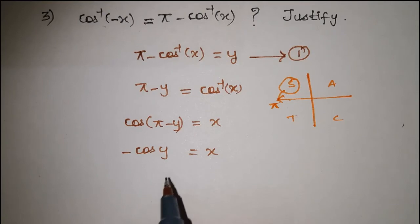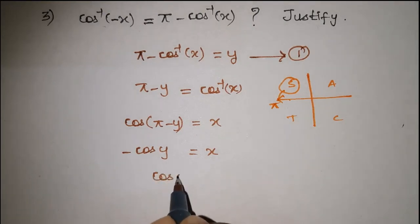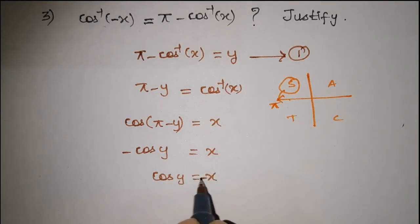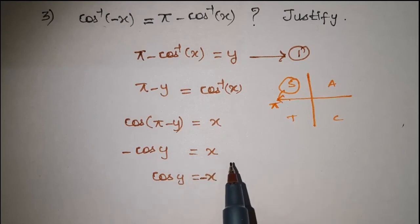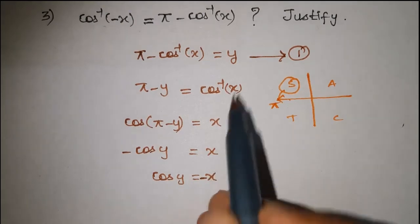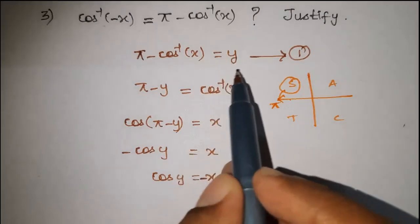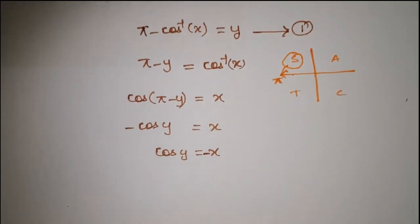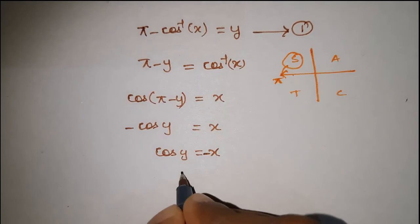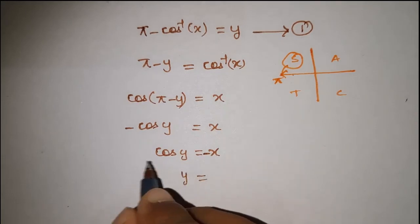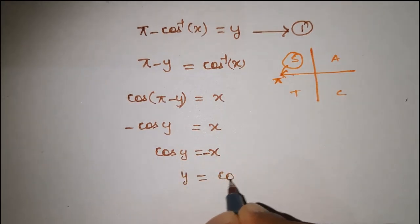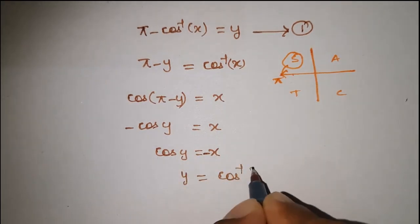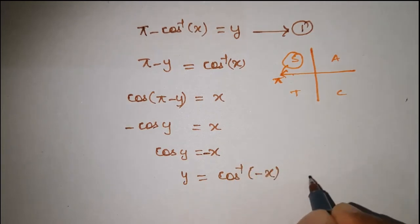Next, pi minus cos y is equal to minus x. So, applying cos inverse to both sides, y is equal to cos inverse of minus x. This is the second equation.